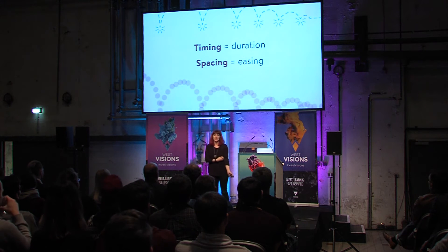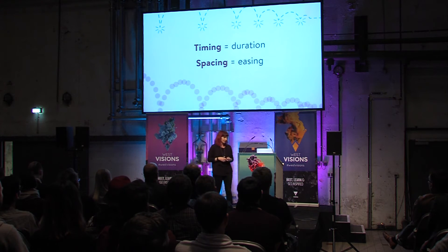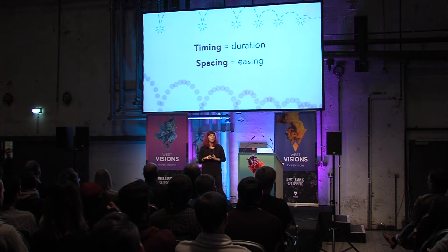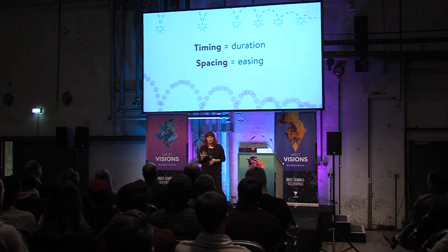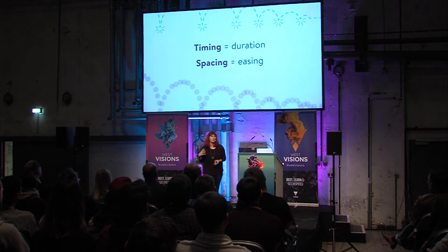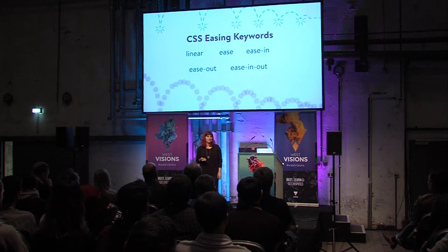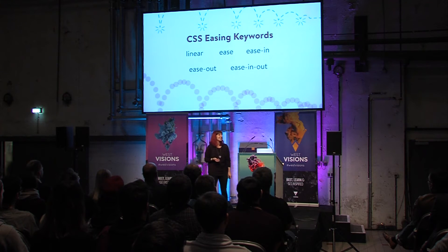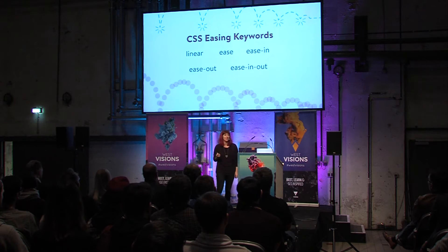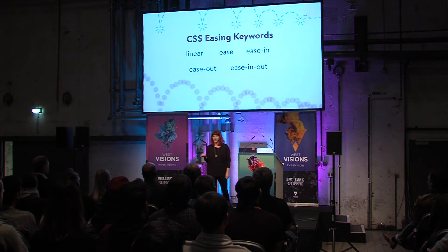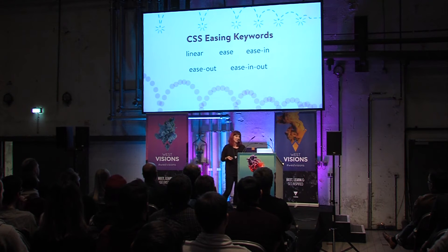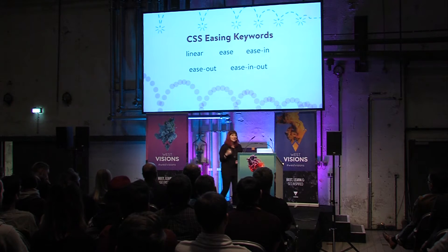For most of what we do, timing is duration and spacing is easing — that's how we accomplish these two principles. This can seem like a sticking point when you look at CSS and realize you've got only five ways to create emotion with easing keywords. And you're thinking, how can I be expressive with only five choices? Does that mean we only have five personalities for all our animation? But of course, that's not the case.